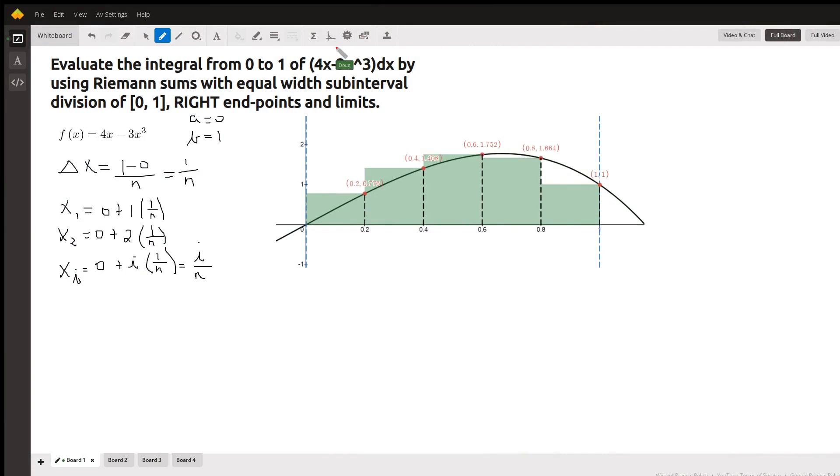Okay, I'm going to go through this problem fairly quickly, so pause the video when appropriate and take some notes. Here's a picture from Desmos of the portion of the graph of this function, 4x minus 3x cubed.